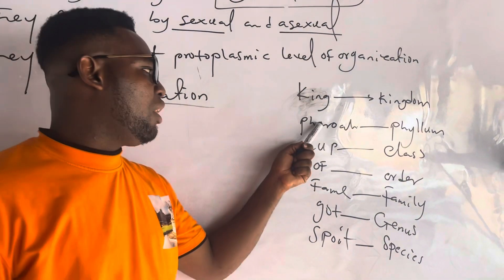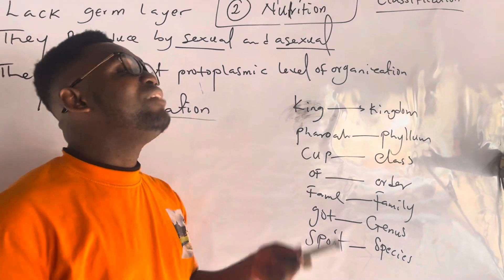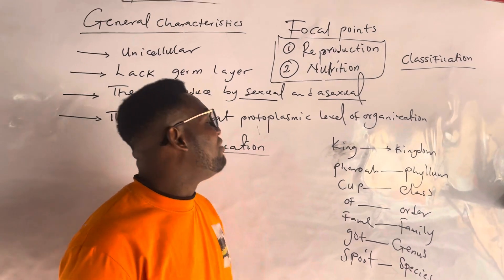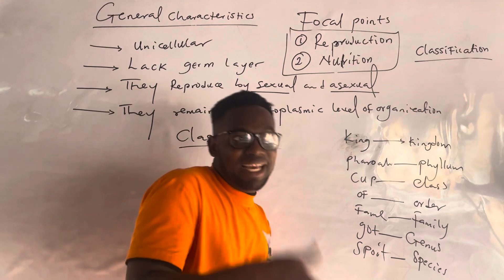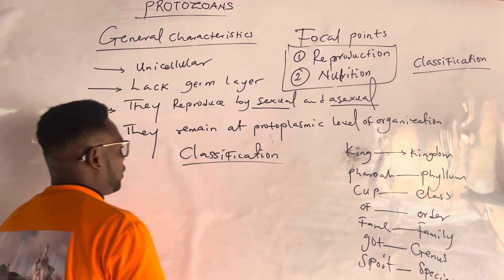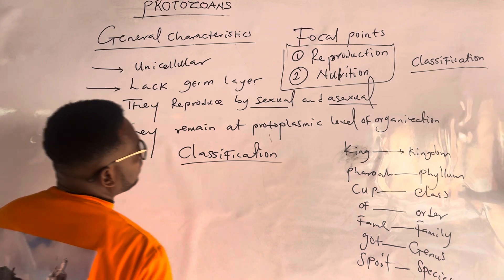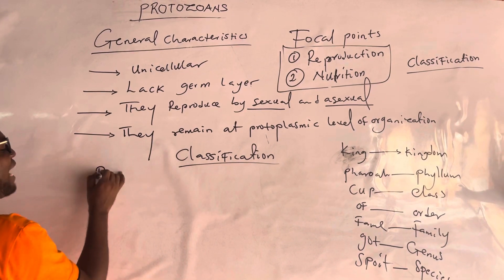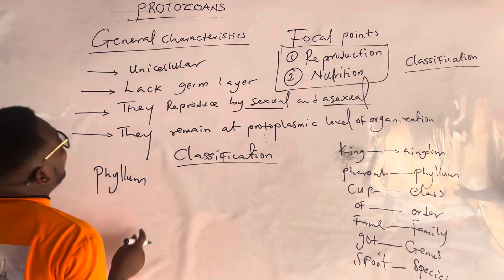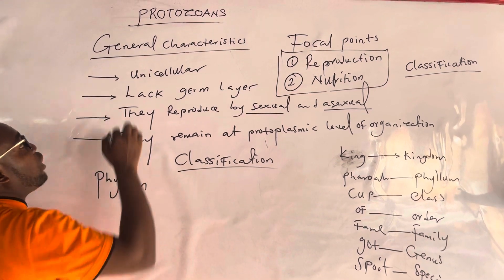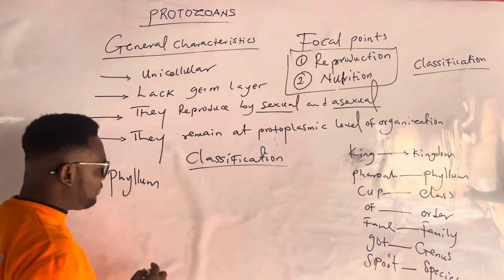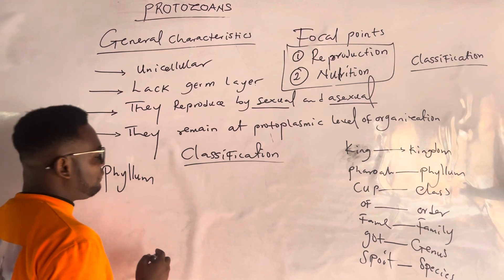After a kingdom there is phylum, and even a sub-phylum before class. After class there is something called sub-class. For classification, there are seven phylums under the kingdom protozoa. These seven phylums we can remember using SLAMAX.